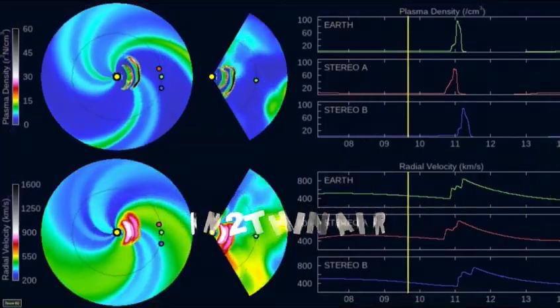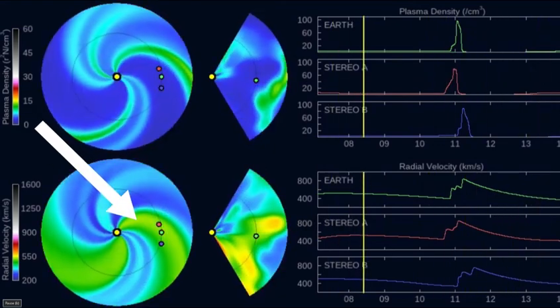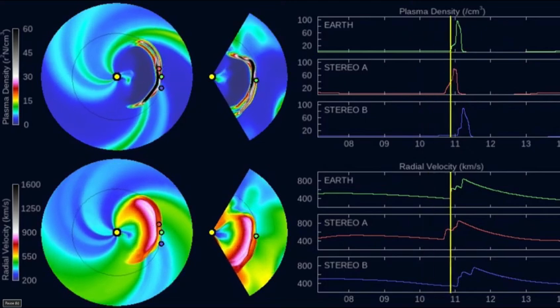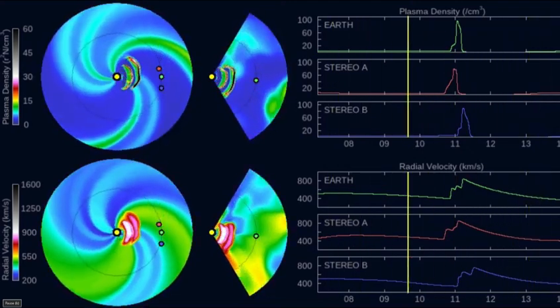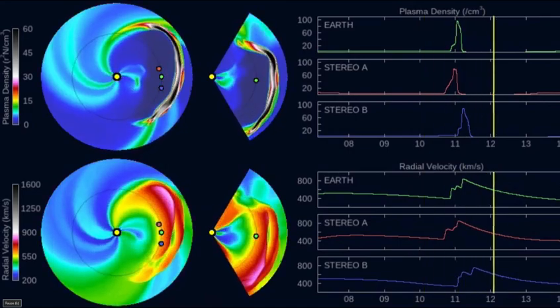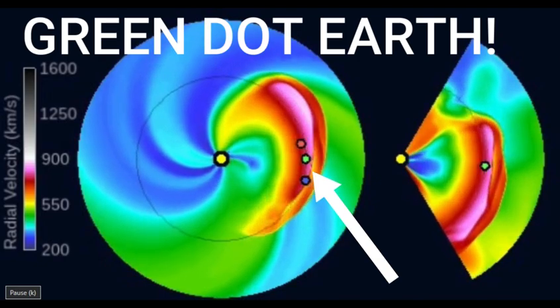All right everybody, welcome back. May 9th, 2024. This is a very serious situation. You're looking at the ENLIL spiral chart, which tells us about CMEs and very large amounts of energy hitting the Earth. As you can see, we are about to be hit by four CMEs. The last time we had anything of this type of strength in a forecast was during the Carrington Event in the 1800s.